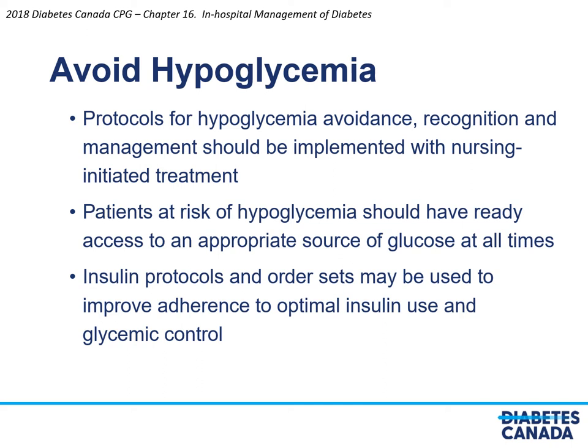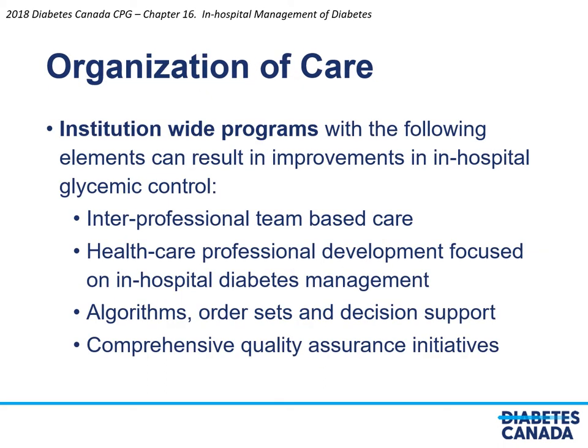When discussing glycemic control in hospital, it is important to remember that hypoglycemia must be avoided. Protocols should be in place for hypoglycemia recognition and management; these protocols should be nurse-initiated. Patients at risk of hypoglycemia should have ready access to an appropriate source of glucose at all times. Insulin protocols and order sets may be used to improve adherence to optimal insulin management. Achieving glycemic control in the hospitalized patient can be challenging; however, institution-wide programs can result in improvements. Elements of programs shown to improve glycemic control include interprofessional team-based care, health professional development focused on in-hospital diabetes management, algorithms, order sets and decision support, and comprehensive institution-wide quality assurance initiatives.